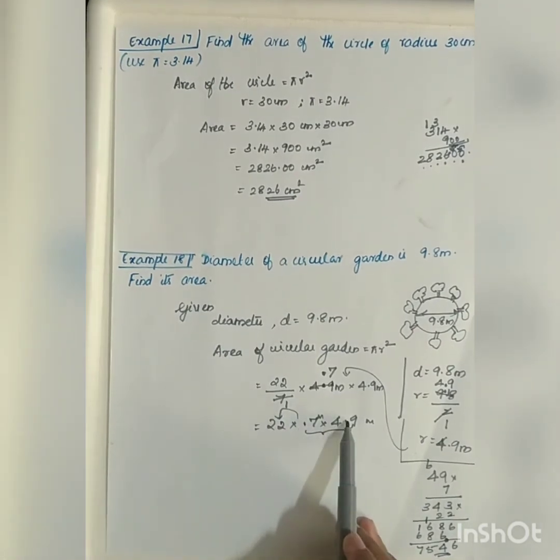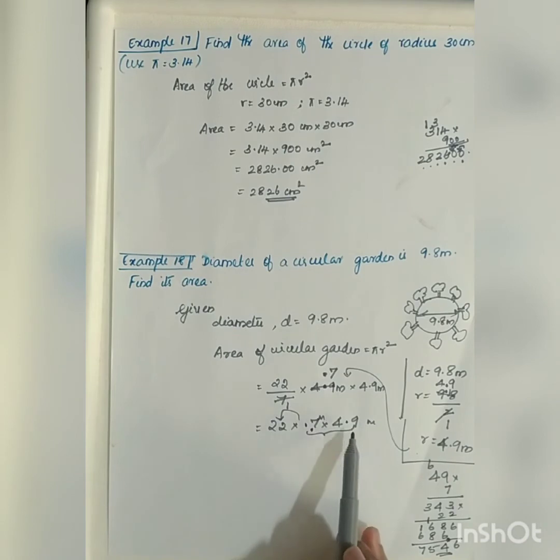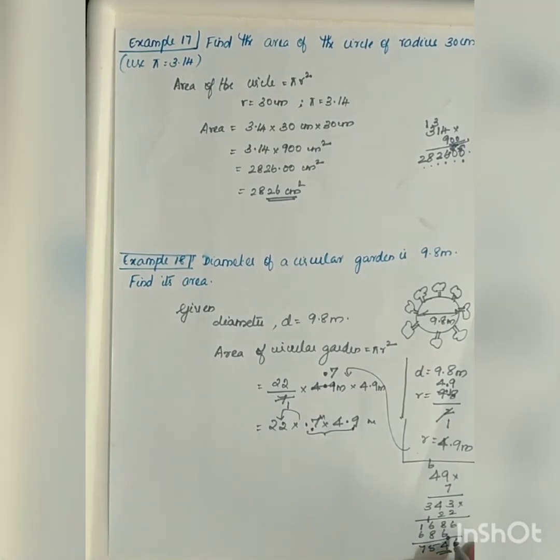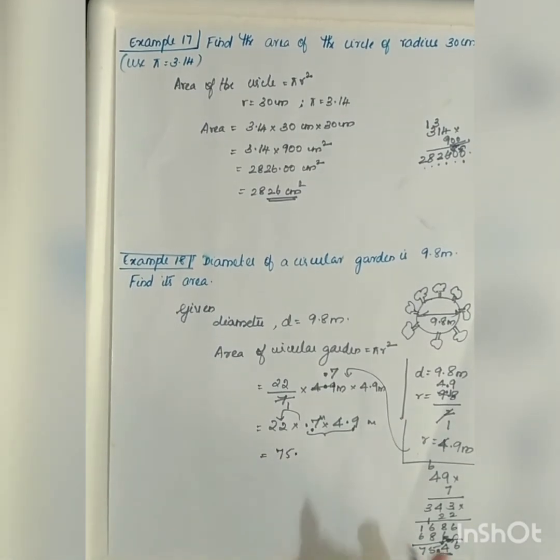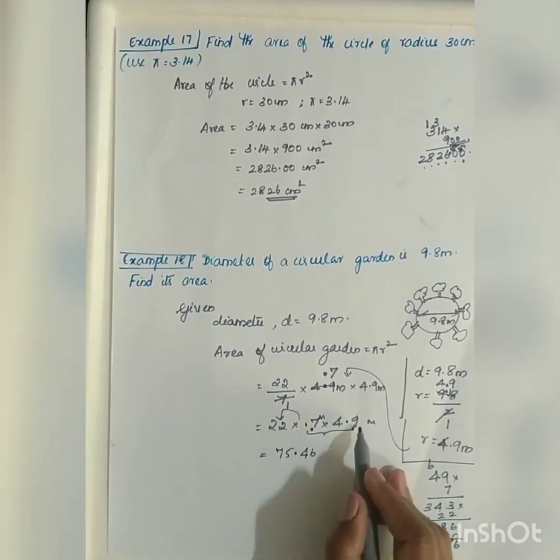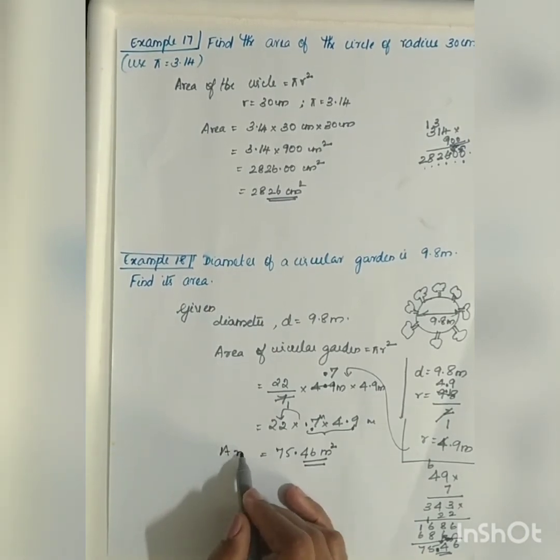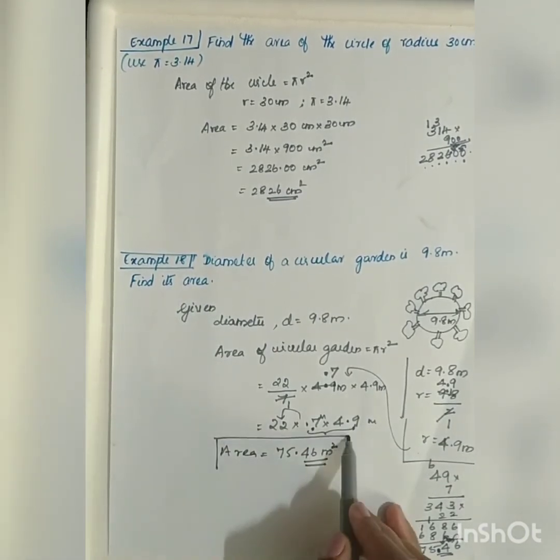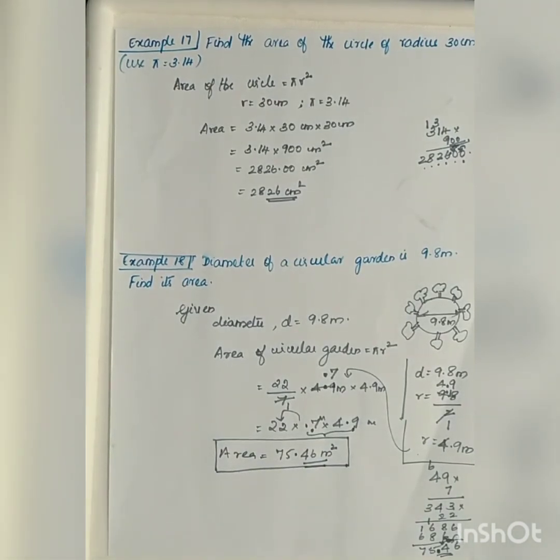But after the decimal point, you have how many digits you have? Totally 2 digits. Here it is 0.7 and here it is 0.9. I am going to shift 2 digits towards the left. You will be getting the answer will be equivalent to 75.46. Meter into meter, it is meter square. The area of the circular garden will be equivalent to 75.46 meter square.